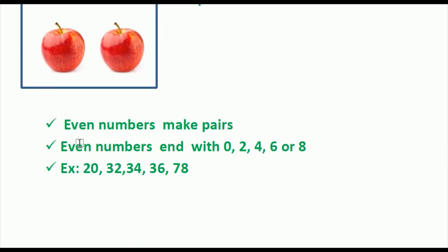The first point is: even numbers make pairs. The second point is: even numbers end with 0, 2, 4, 6, or 8. These two points you should keep in mind — even numbers make pairs, and even numbers end with 0, 2, 4, 6, or 8.